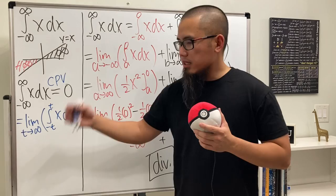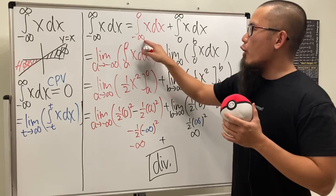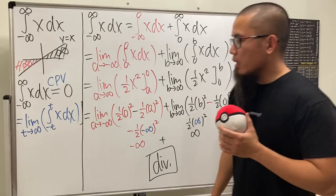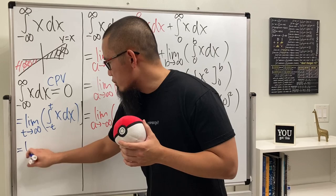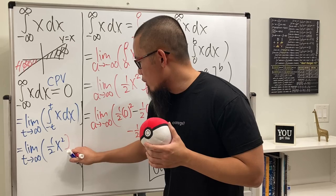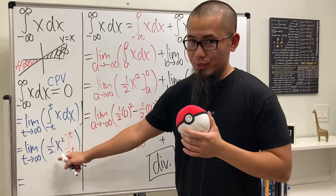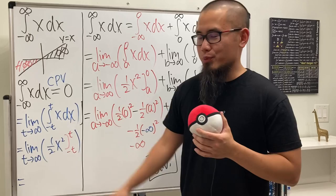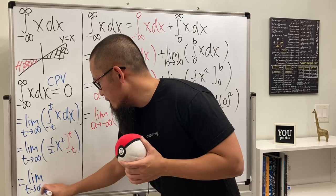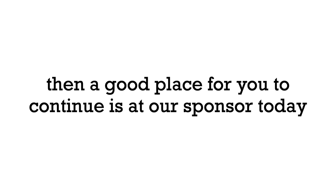Notice that negative t and positive t are equidistant from zero — equal distance to the left and to the right. Working this out: we get the limit as t goes to infinity of one-half x squared evaluated from negative t to t, which gives t squared over two minus t squared over two, which is just zero. So the Cauchy Principal Value of this integral equals zero.